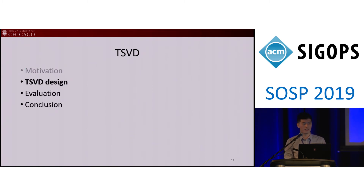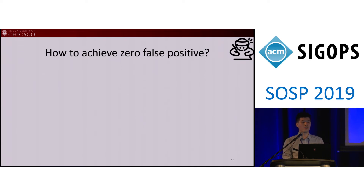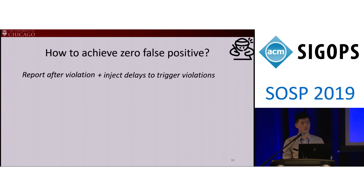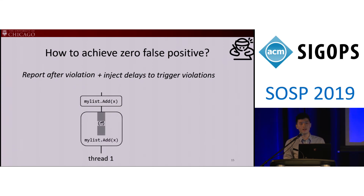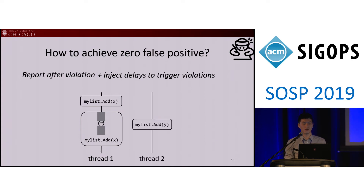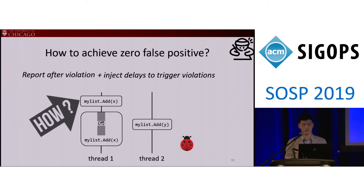Let me tell you what's the secret sauce behind TSVD. First, how to achieve zero false positives? We report a thread safety violation only after the violation actually occurs. But since violations rarely occur naturally, the real solution is: after we identify a call site that can potentially violate the thread safety contract, the next time this call is executed again in the same run, we insert a delay to slow it down. If a conflicting call executes during this delay, a true bug is found.